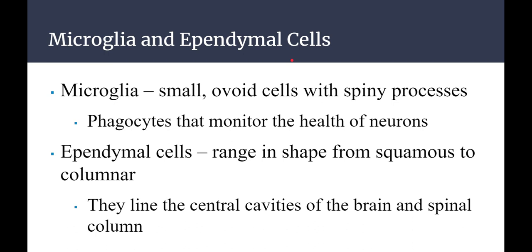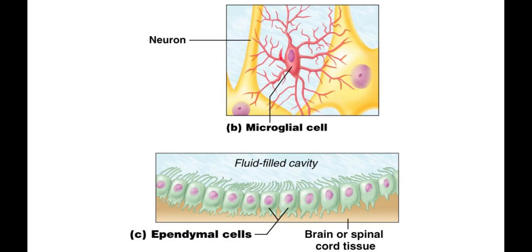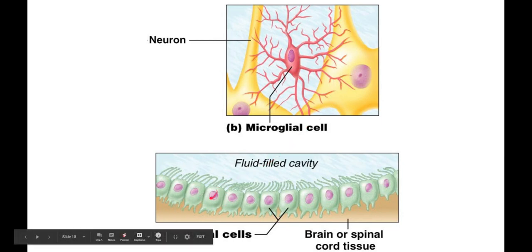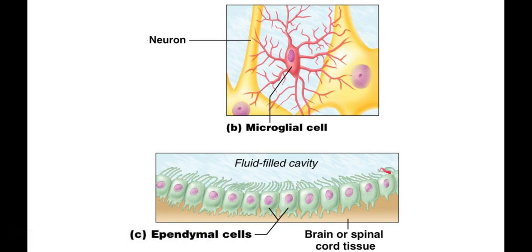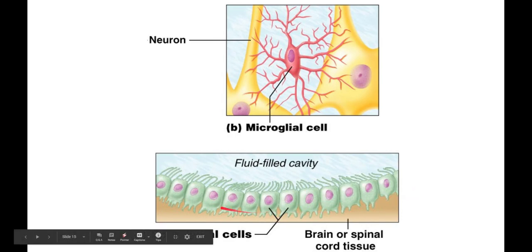We also have microglia — micro meaning small — these are small cells with spiny processes. They are phagocytes, meaning they eat other cells, and they monitor the health of neurons. Then you have ependymal cells, which range in shape with squamous and columnar cells — they look like the epithelial cells of the nervous system and they line the central cavities of the brain and spinal column. You can see the ependymal cell has cilia, just like ciliated epithelial tissue.